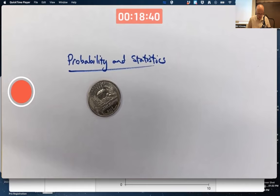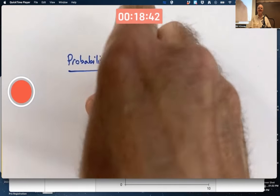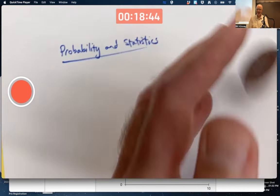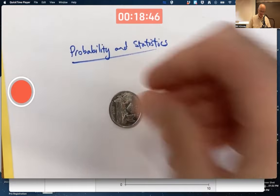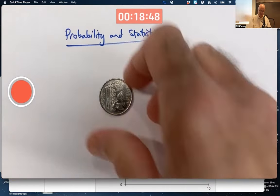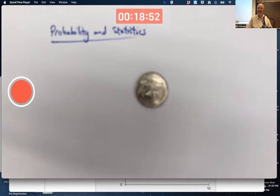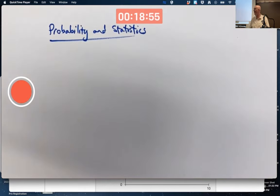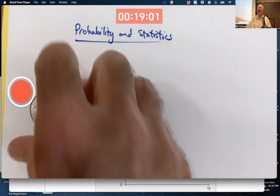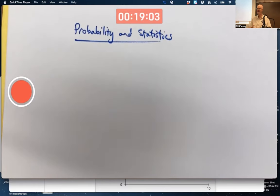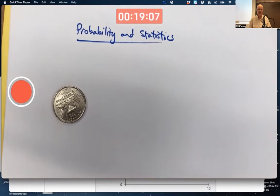That's tails. Tails again. Three tails in a row. What a small probability. Tails again. I wasn't expecting this to happen. Rare things do happen. This is a good lesson. Tails again.